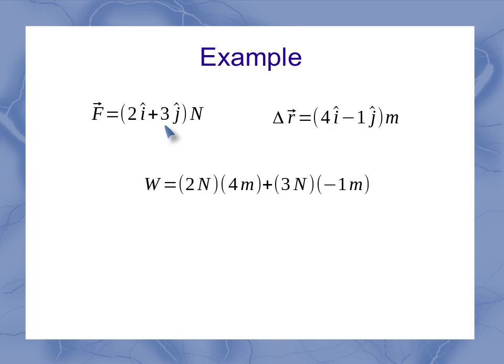And then my j, 3 newtons and minus 1 meters, gives me my other part. When I multiply these, I've got then 8 newton meters for the contribution to the work in the x direction, and minus 3 newton meters for my j direction. And putting those together, I then have 5 newton meters. So I don't have a vector anymore, I've just got a number. Now remember, we could also express that 5 newton meters as 5 joules, because joule is equivalent to a newton meter.